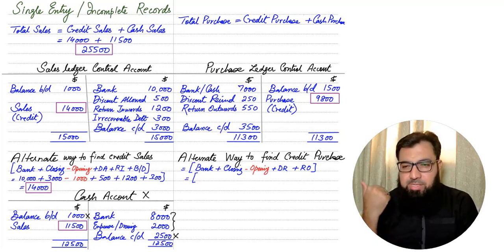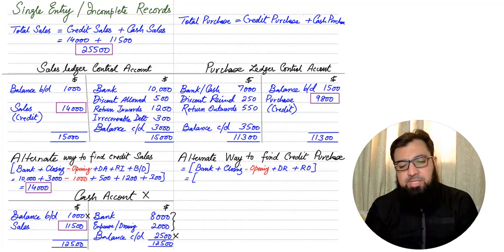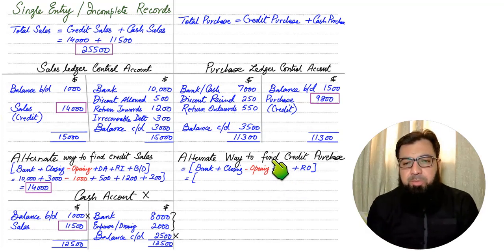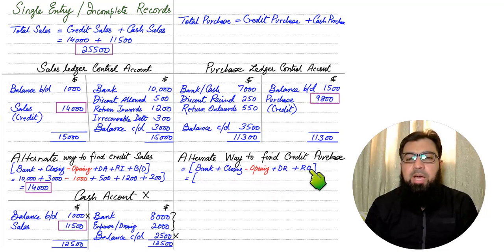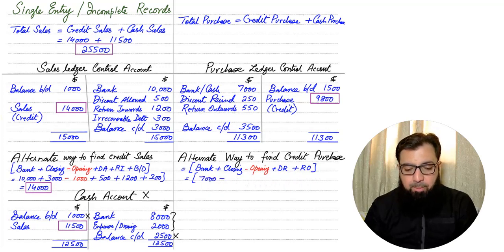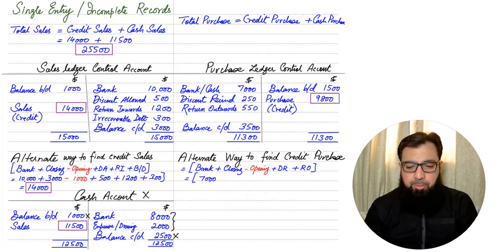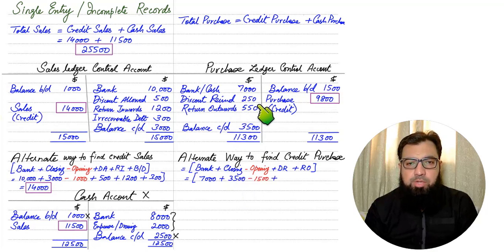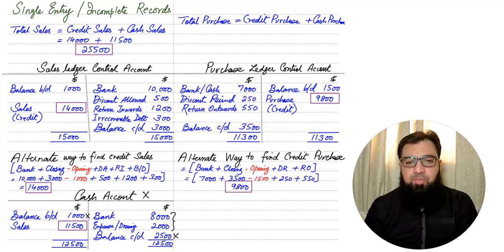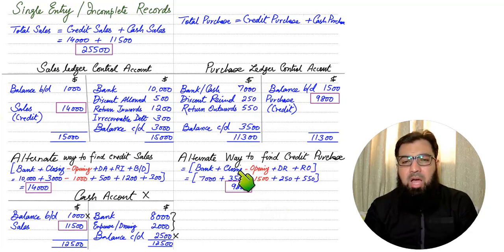The rationale for adding Discount Received is that discount is only received when buying goods on credit and paying suppliers early. Since Discount Received only arises from a credit purchase, it should form part of the credit purchase figure. Similarly, Return Outward only arises when returning goods to credit suppliers, so Return Outward also becomes part of the credit purchase figure.